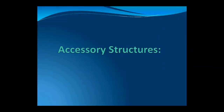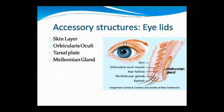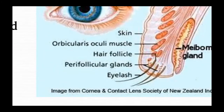The first topic is the accessory structures. In the eye there is a skin layer, orbicularis oculi, tarsal plate, and meibomian gland. You can see the meibomian gland in the structure of the eye.